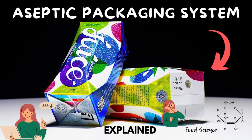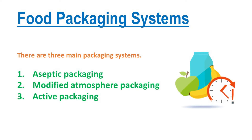Hello, my dear students. Today, we are going to discuss a very important topic in food packaging: the Aseptic Packaging System. When we talk about food packaging, there are three main packaging systems. They are aseptic packaging, modified atmosphere packaging, and active packaging.